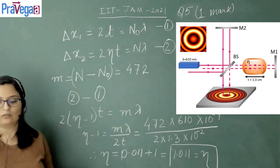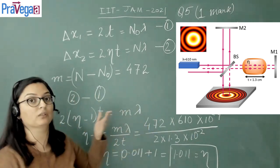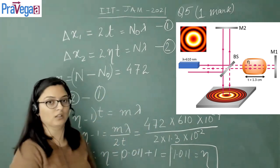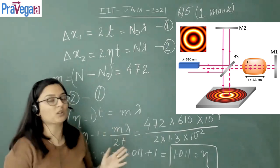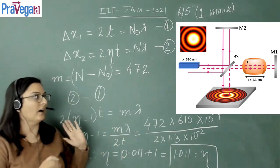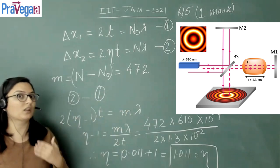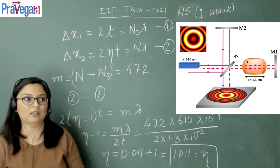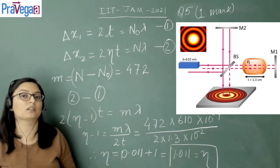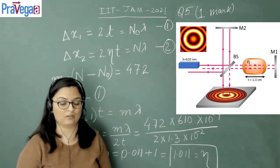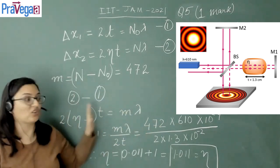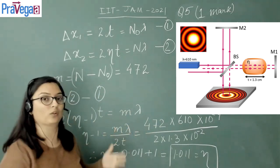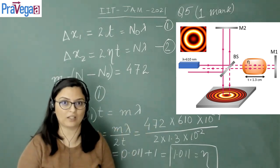We have now calculated the refractive index of the medium that was filled inside the cavity in the Michelson interferometer. In the question it was given that the dark fringes are moved. Just think over it - what will happen if instead of dark fringes, the observer calculates the number of bright fringes collapsed? Will there be a change or not? You have to think over it and please let us know what will be the answer in that case. Thank you.